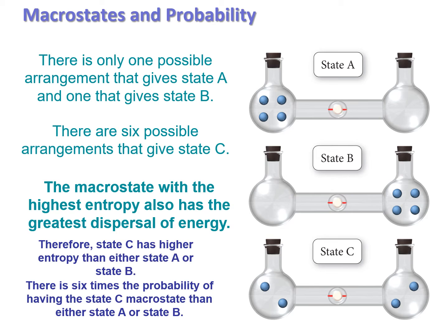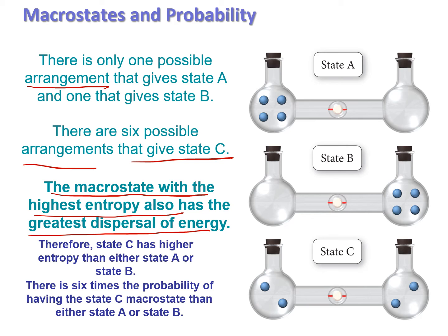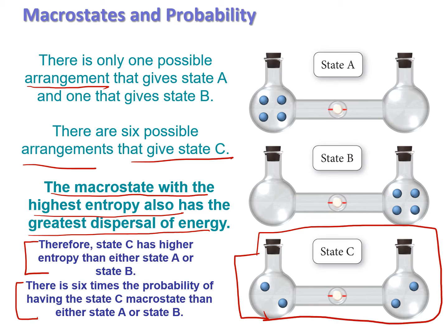Back to which macrostate the universe would actually prefer: state C. For states A and B, we only have one possible microstate each. For state C, we have six possible arrangements giving the same macrostate. So macrostate C has the highest entropy and the greatest dispersal of energy — there is six times the probability of having state C compared to state A or B.